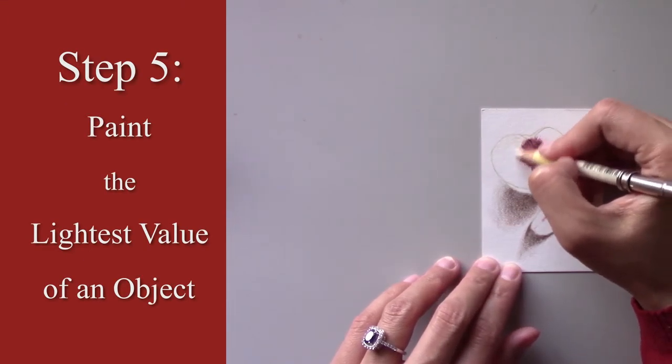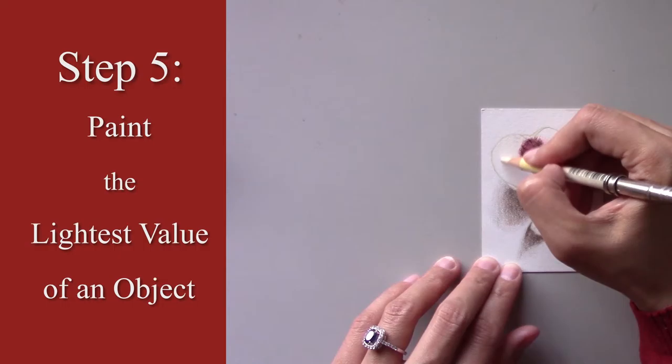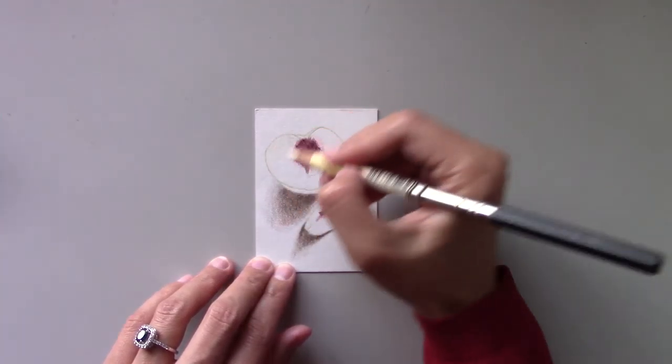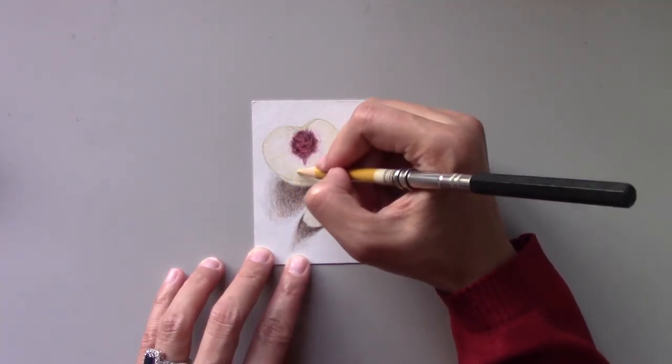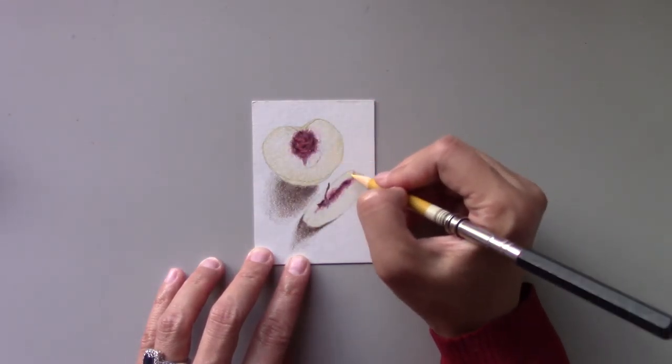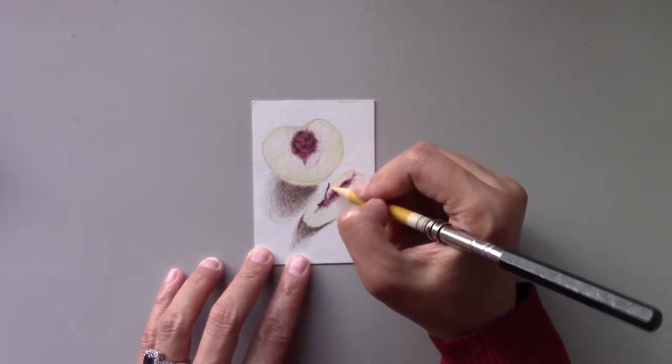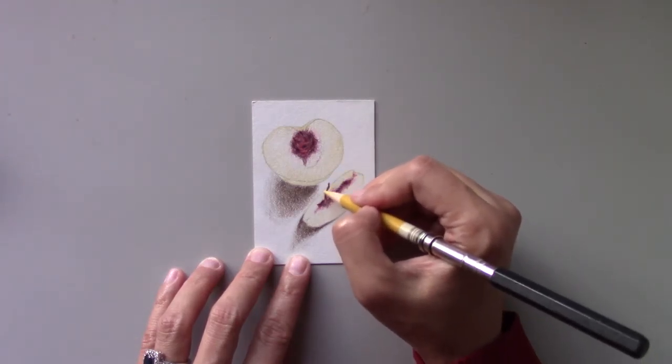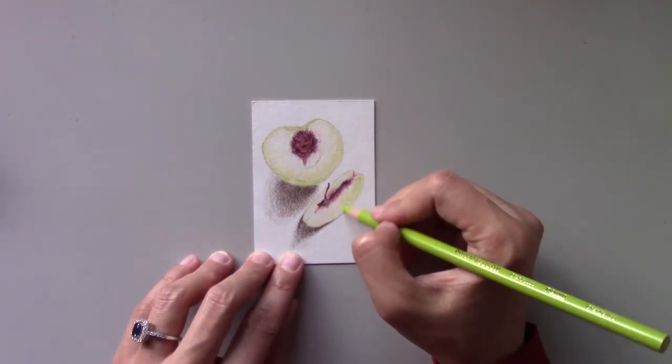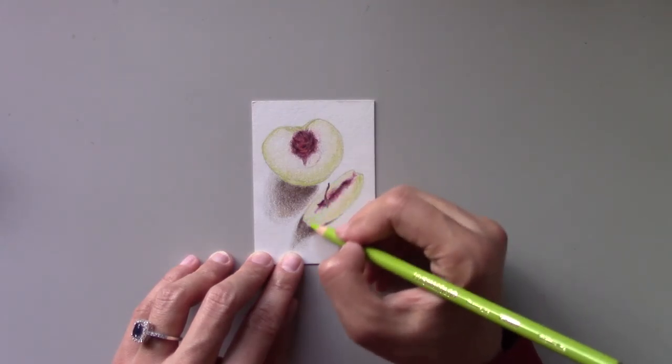Now we're going to color the peach. First, wash it with cream using light pressure and a circular stroke. Layer the next wash using jasmine, leaving out the areas around the center of the peach as it's the lightest area on the fruit. I continue with chartreuse on the edges of the peach with really light pressure.